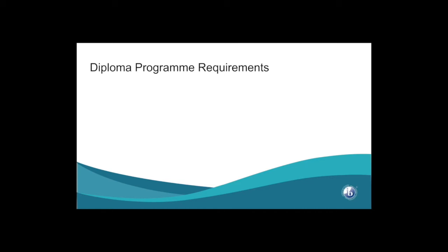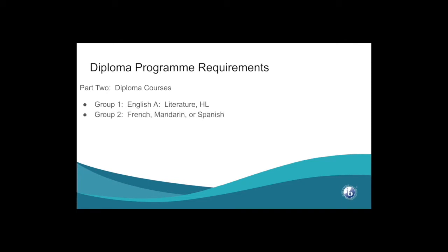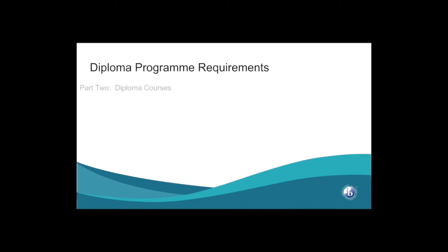Diploma Program students are required to take the following courses. All students must take English at the Higher Level. You have an option of French, Mandarin, or Spanish. You have the option of History, Psychology, or Global Politics at the Standard or Higher Level. You have the option of Environmental Systems and Societies at the Standard Level, Nature of Science at the Standard Level, Physics at the Standard or Higher Level, and Sports, Exercise, and Health Science at the Standard or Higher Level.